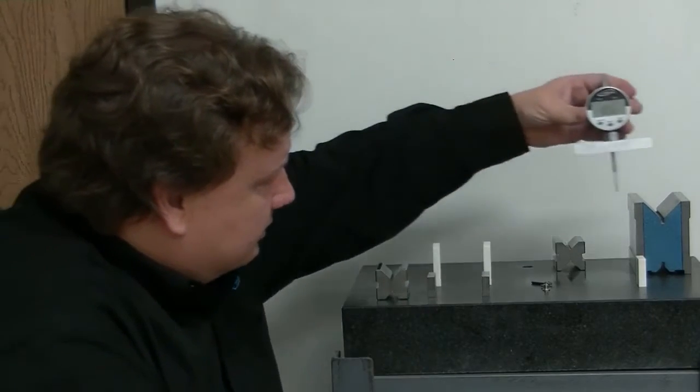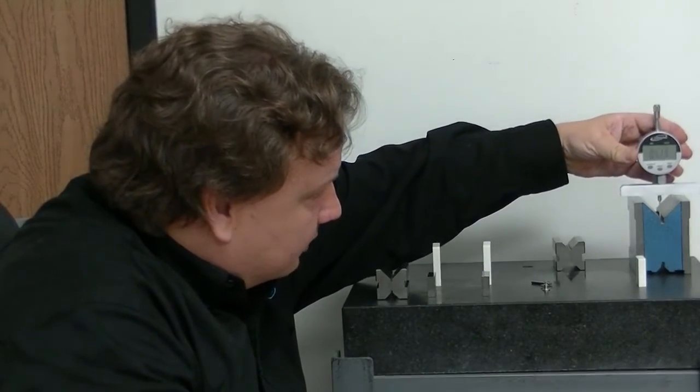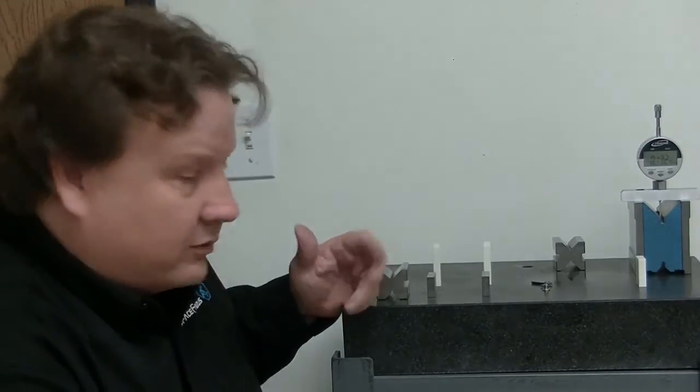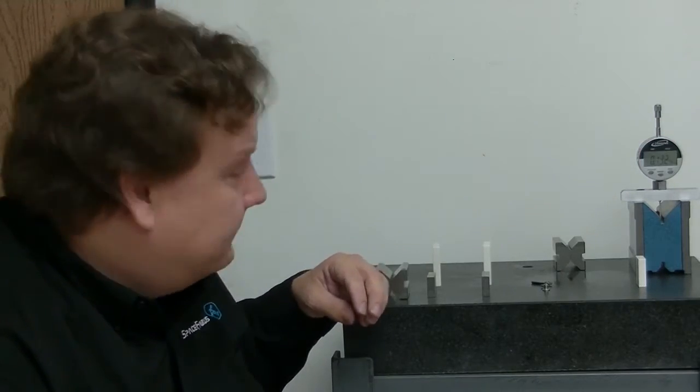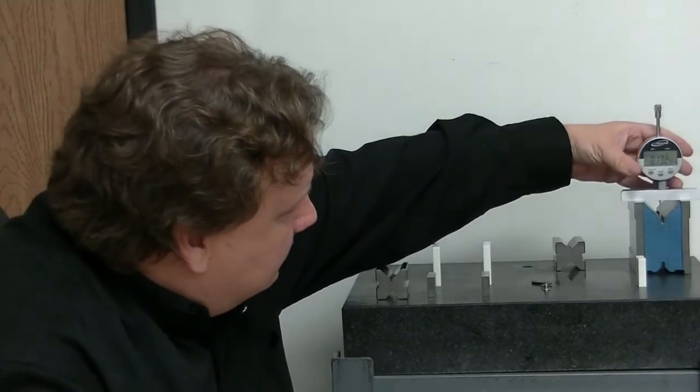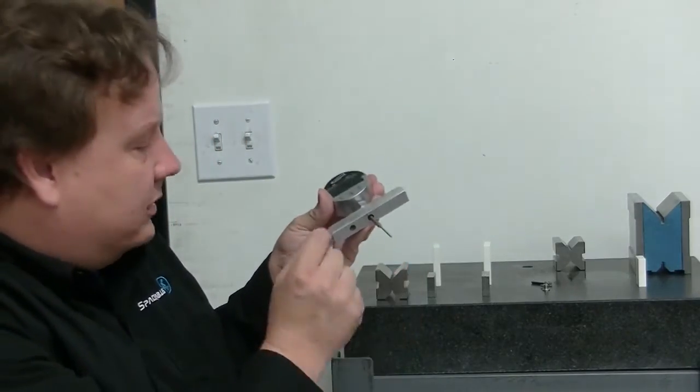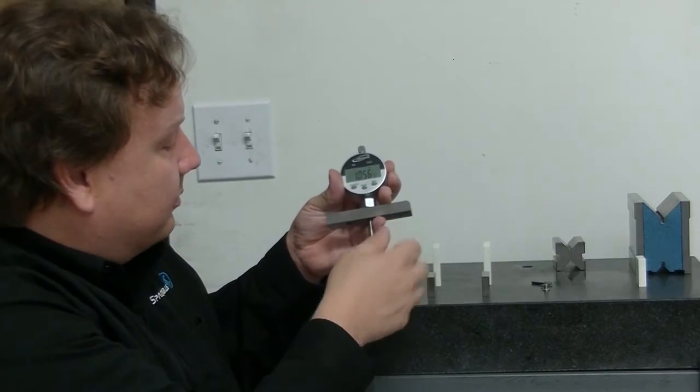And then you can measure depth in smaller places like that. So we're getting 0.132 and a half inches. And then they also come with a very sharp one for really small points or small places.